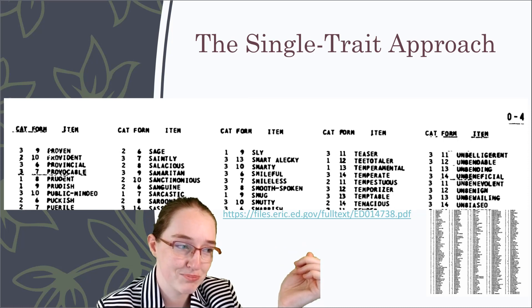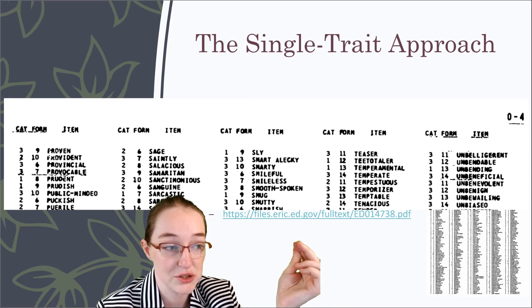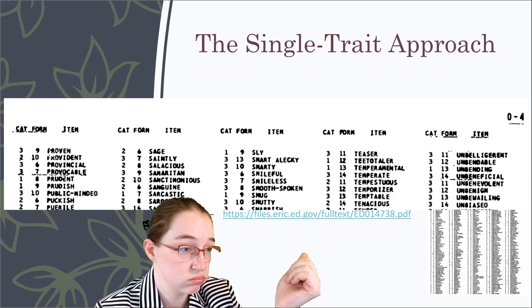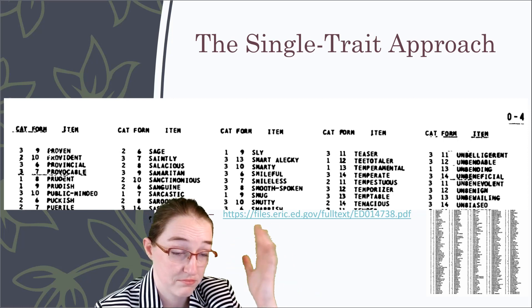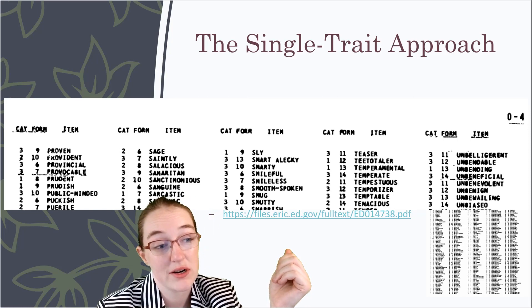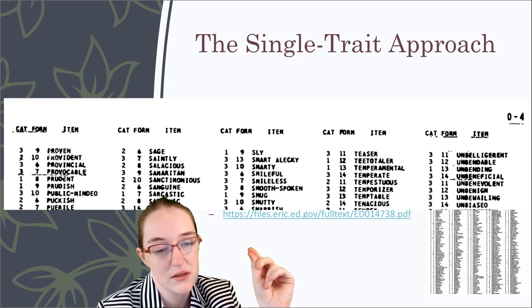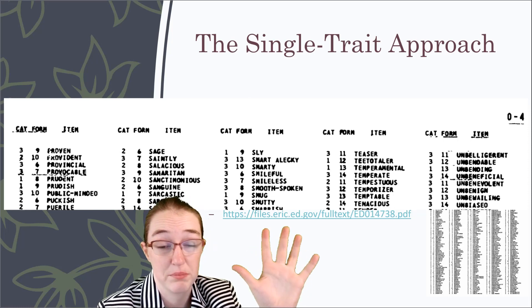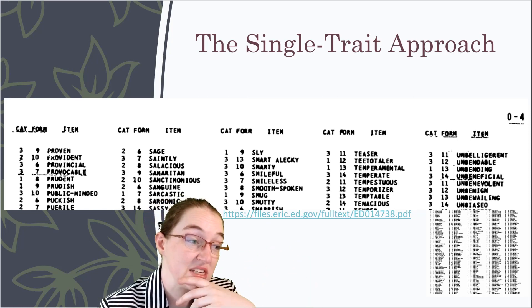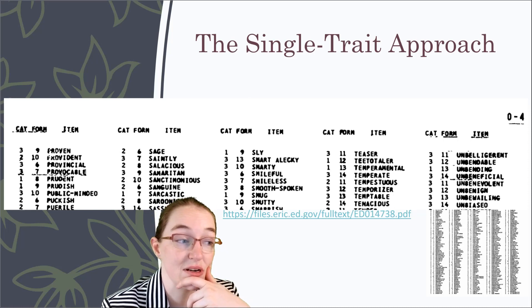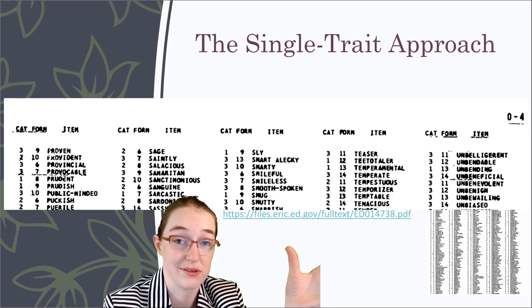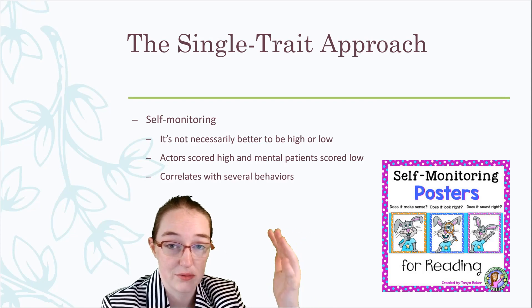A lot of these traits are really similar to each other — like 'smart alecky' and 'smarty,' which have a slight tone difference. There are many similar words that probably cluster together, and there might be some key essential traits. But in the interim, this research approach is: you pick one trait and see all the behaviors it links with.